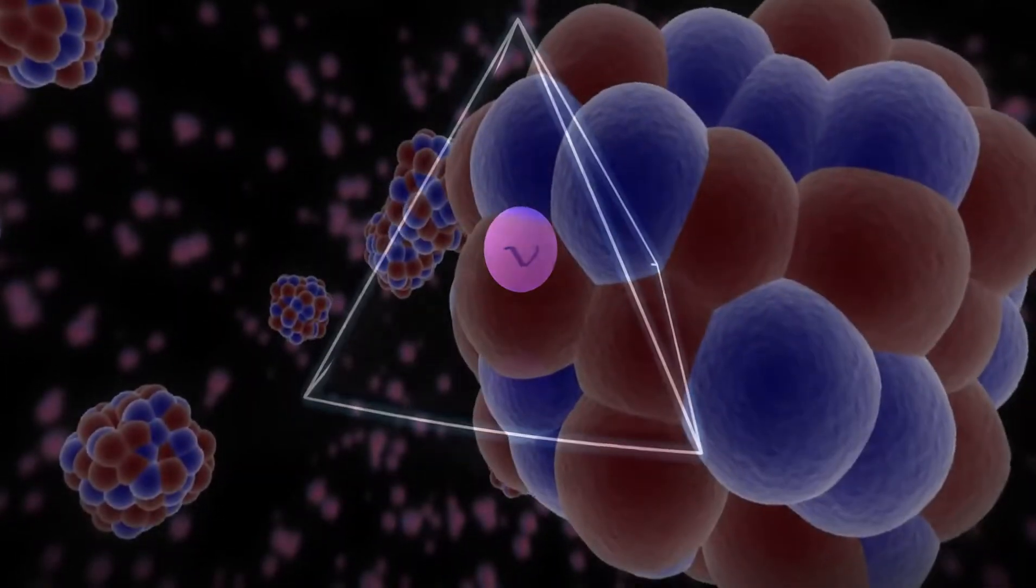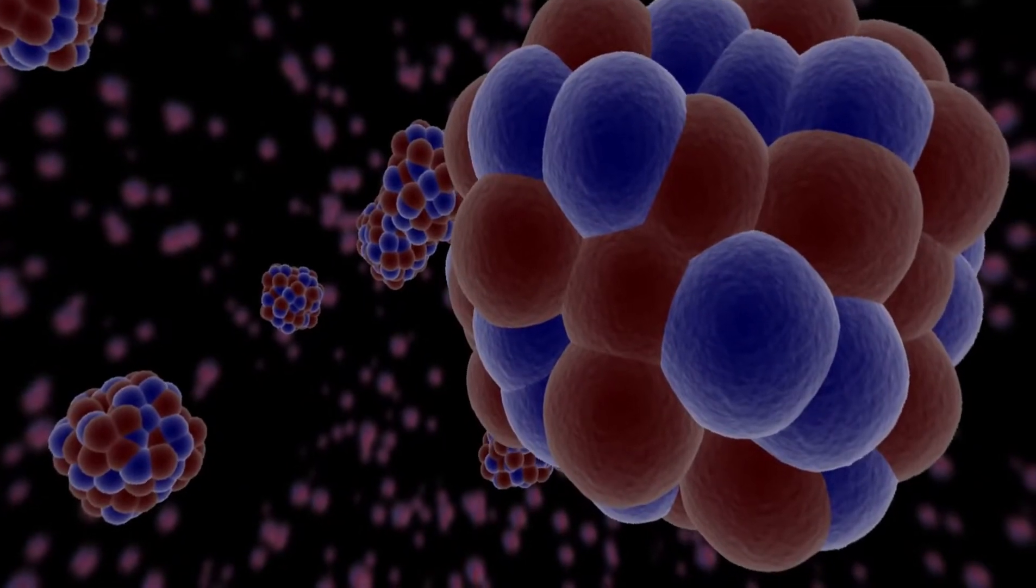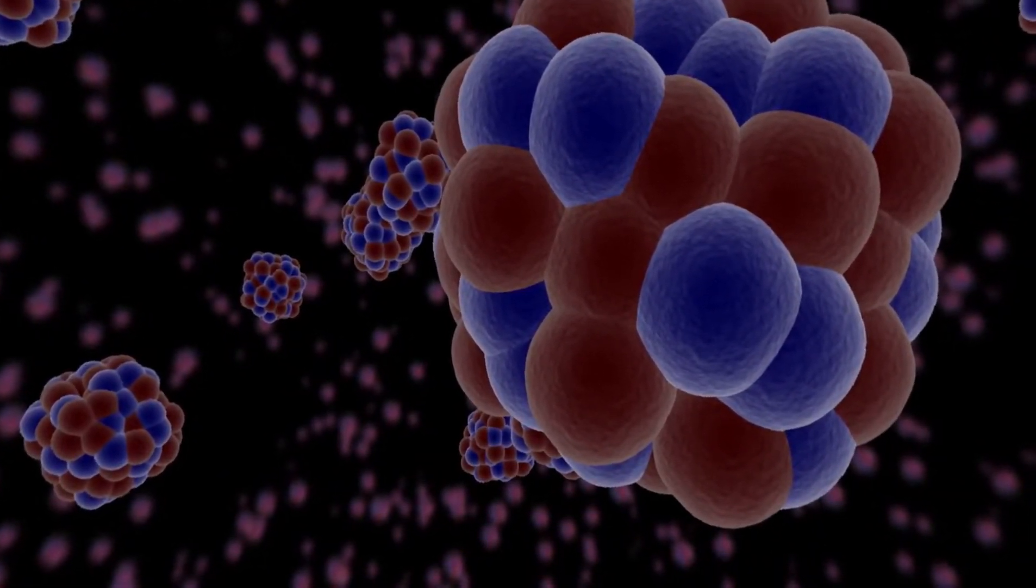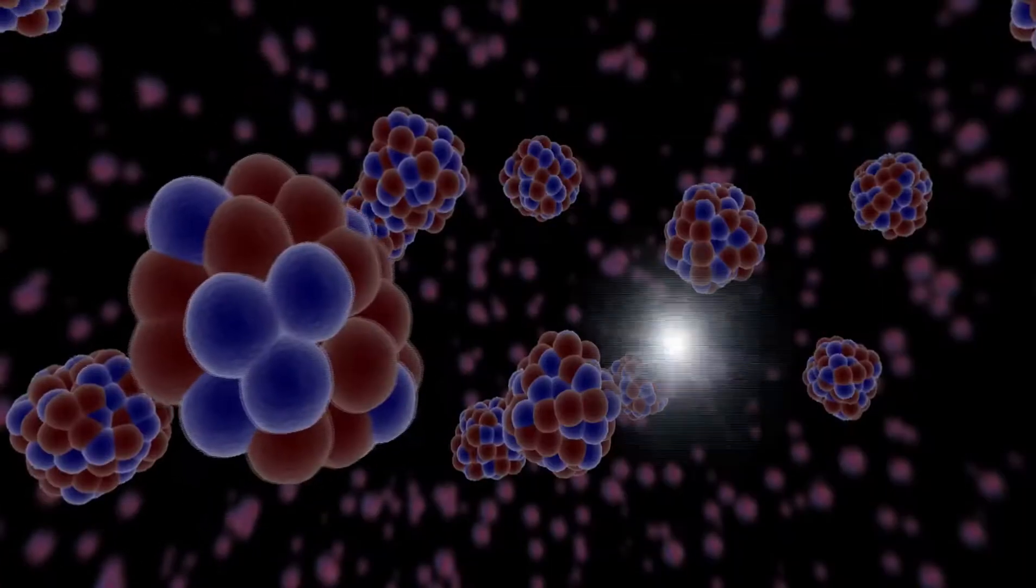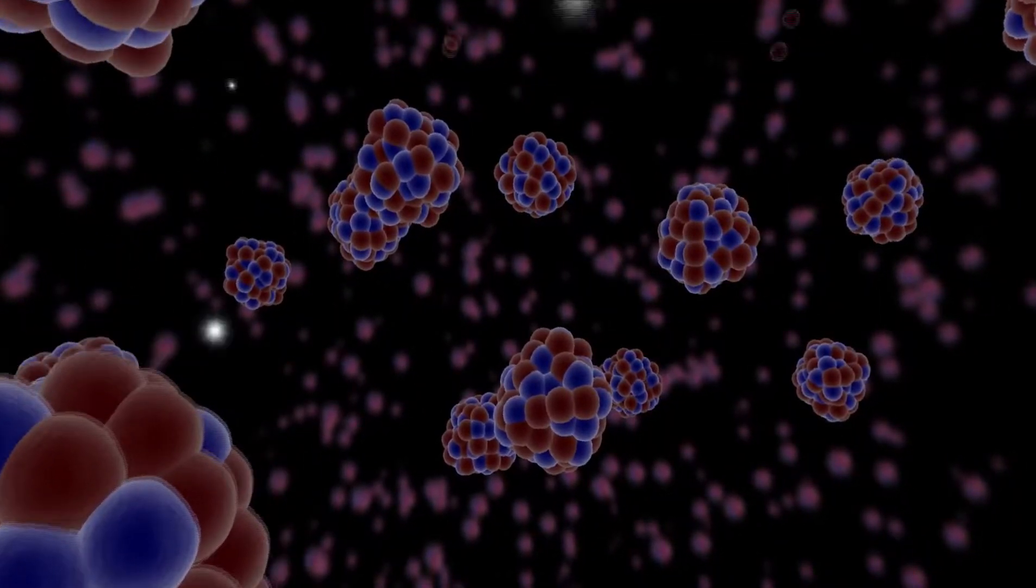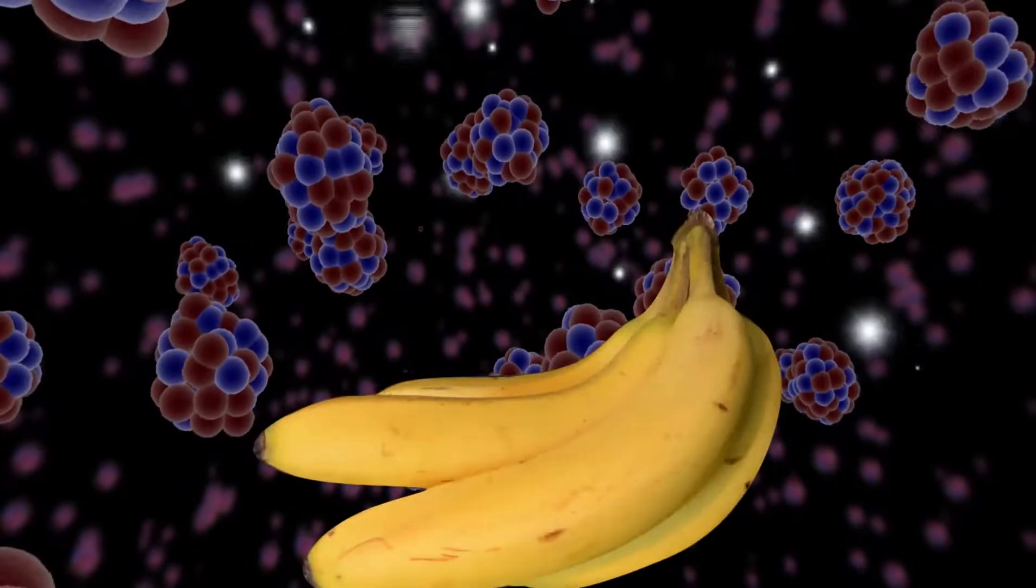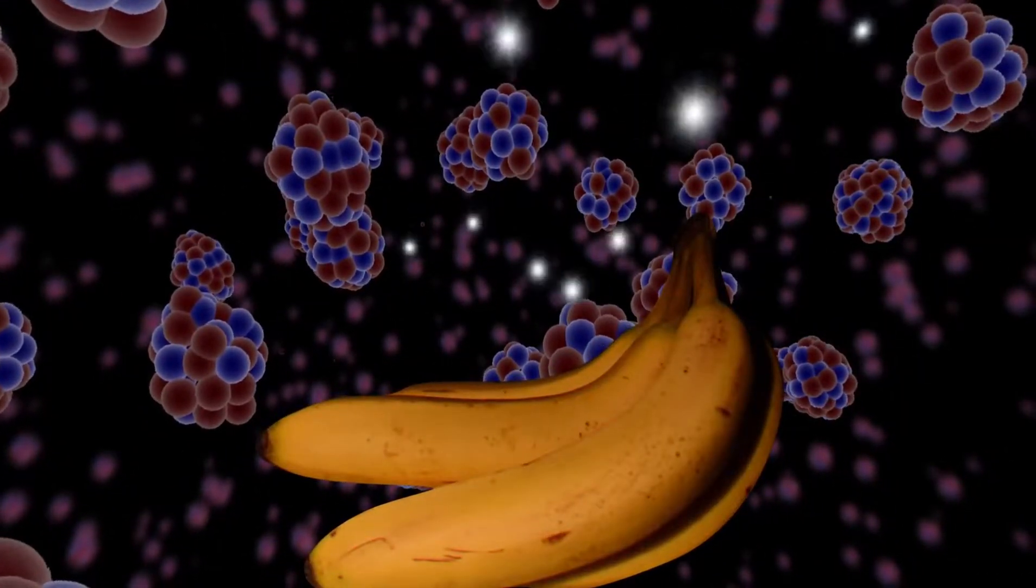When bigger, unstable nuclei rupture, like when uranium changes into lead, they emit energy and neutrinos. Even bananas produce neutrinos from the natural radioactive decay of potassium.